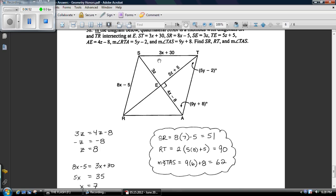A rhombus is a parallelogram. Parallelograms have diagonals that bisect each other. So, RT is worth just two of these leg line segments. So, two times five times eight plus five equals 90.